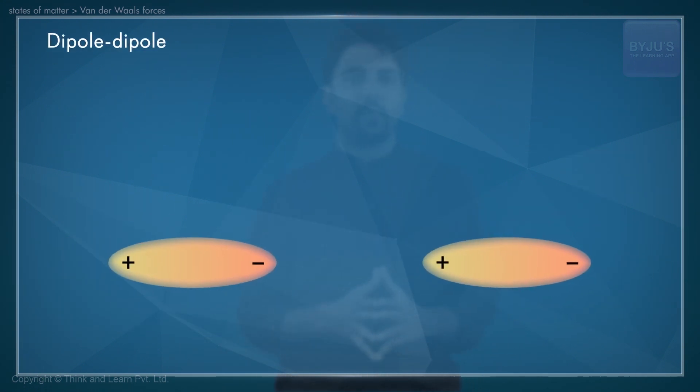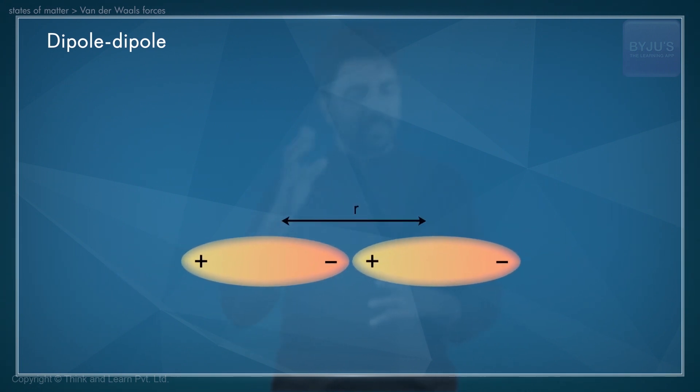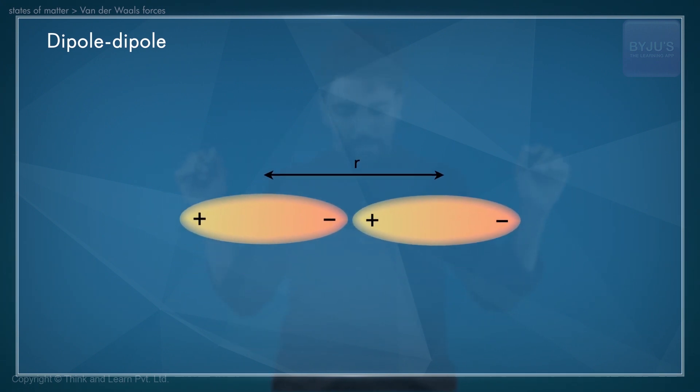Observe this. Here we have two polar molecules with a very fixed configuration such that the interaction is attractive. The dipoles are aligned end-to-end and the potential energy of the interaction is given by this expression.